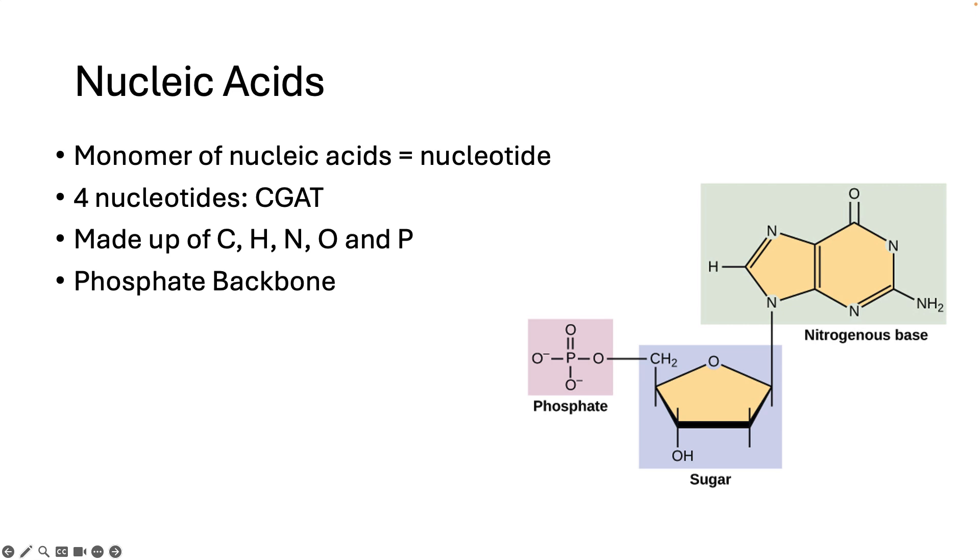Nucleic acids are what makes up genetic material, the blueprints for everything we make in our body. DNA and RNA are made out of nucleic acids. We use DNA as a template to make RNA, and then RNA is used to make proteins.